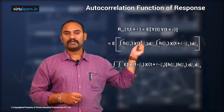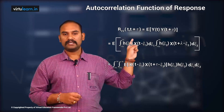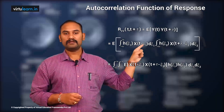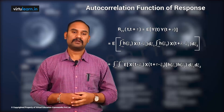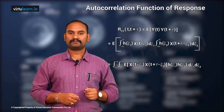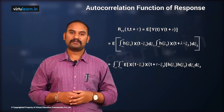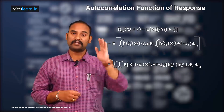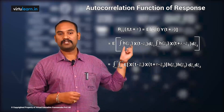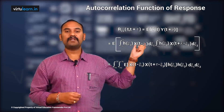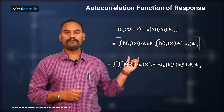Ryy(t, t+τ) is equal to E[y(t) · y(t+τ)] — the expected value of these two things. We know y(t) is the response calculated at the beginning of this discussion. So we have E[y(t) · y(t+τ)], and we know the expression for y(t).